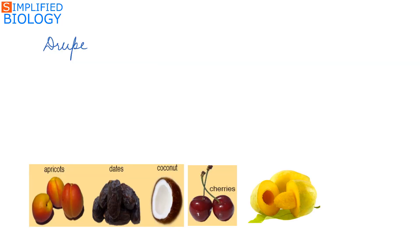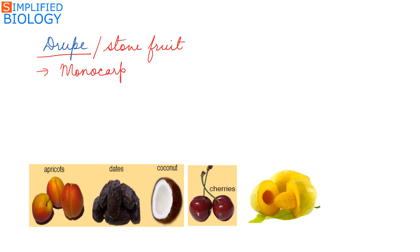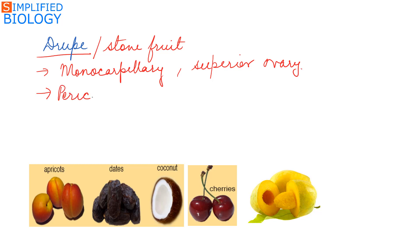The first type of fleshy fruit is the drupe, also referred to as the stone fruit. It develops from a monocarpellary superior ovary. The pericarp has a thin epicarp.